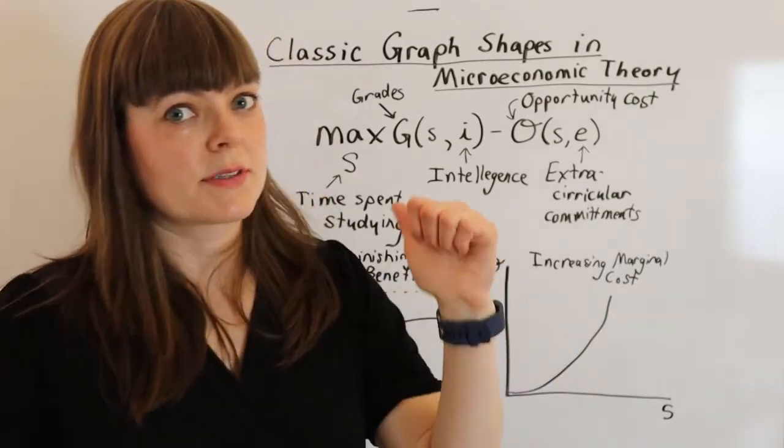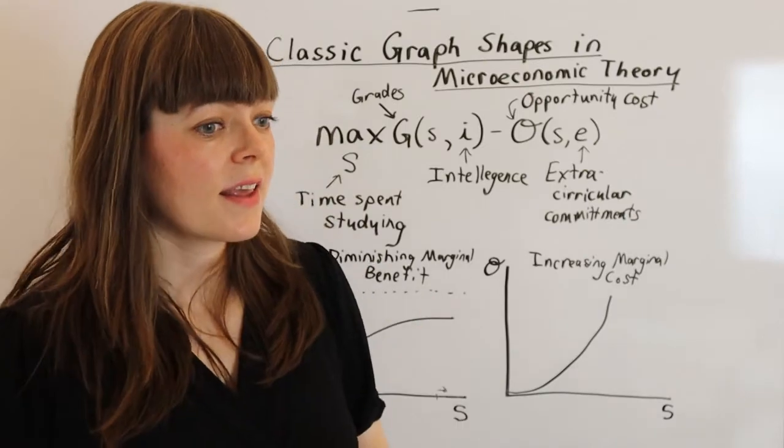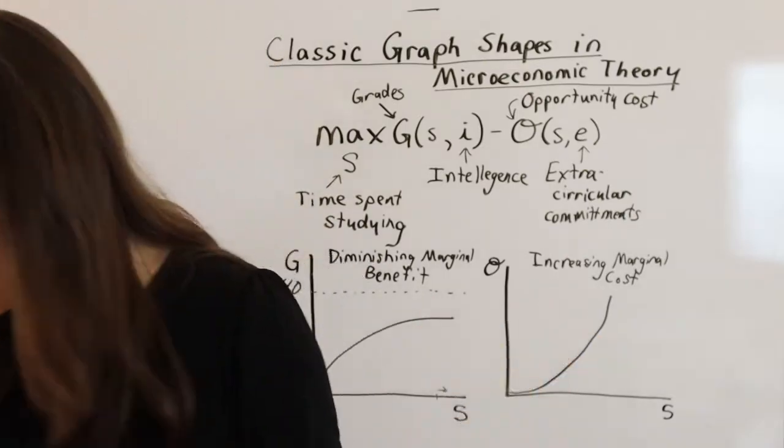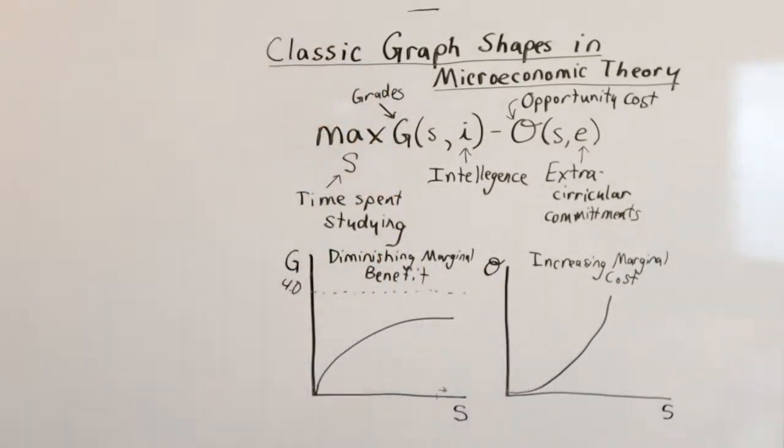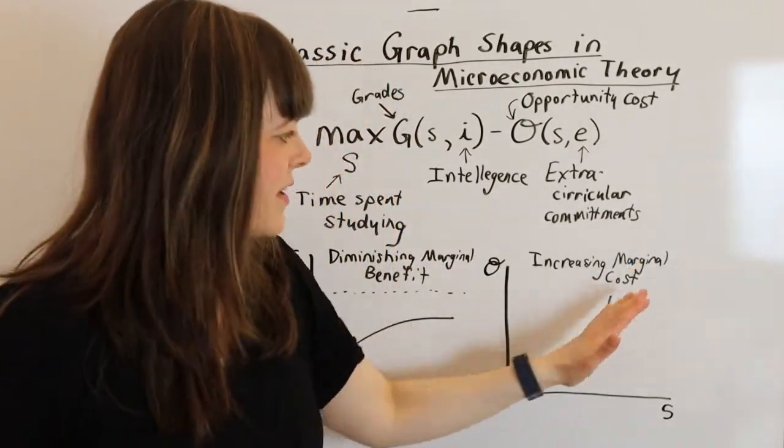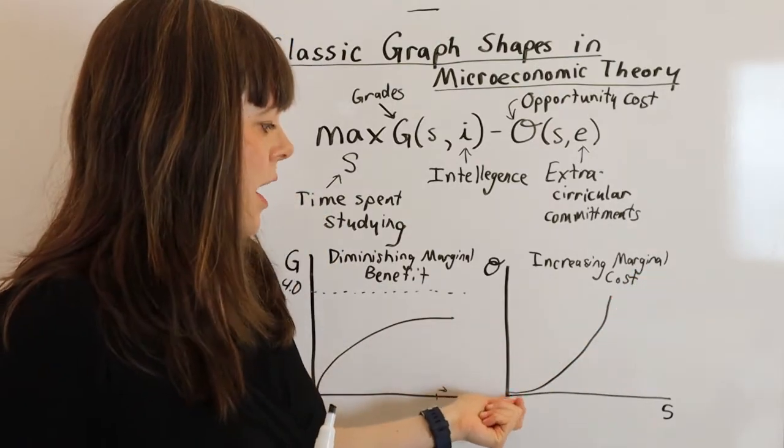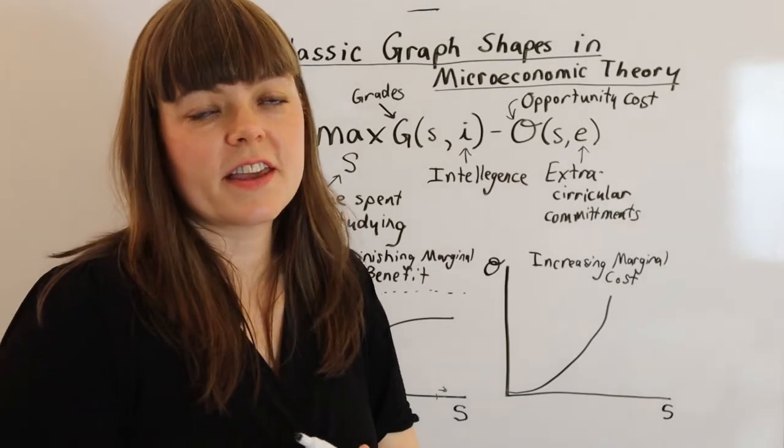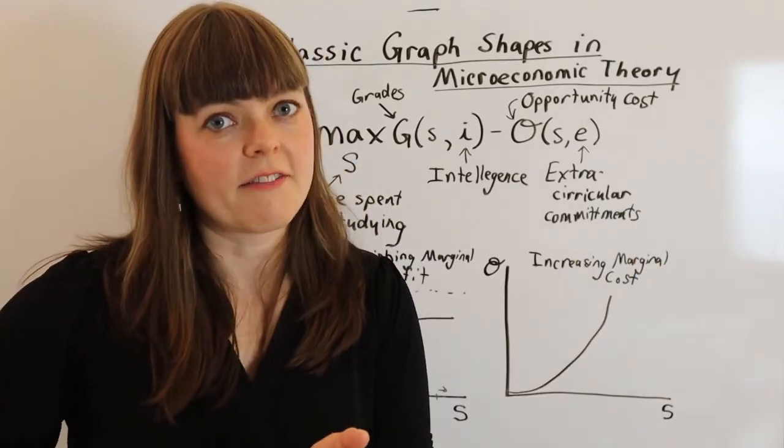Are you going to give up time spent with friends? Are you going to give up time sleeping, time eating? Are you going to give up something less valuable like time spent watching TV? So the reason behind this increasing marginal cost shape is the fact that you always give up the thing in your life that's least valuable to you as you add another half hour studying.